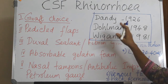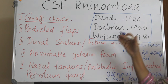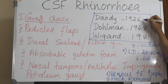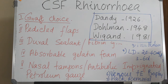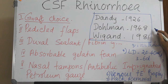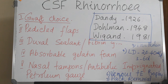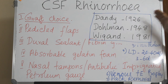CSF repair would not be complete without acknowledging three key personalities. It was Dandy in 1926 who successfully completed the first intracranial CSF repair. Dolman in 1948 performed the first extracranial approach. And it was Weigand in 1981 who published a series on endoscopic CSF repair.